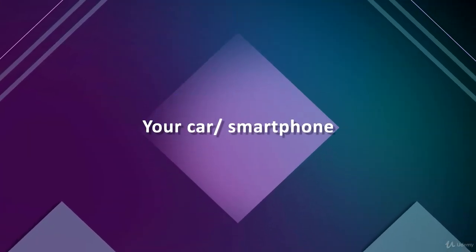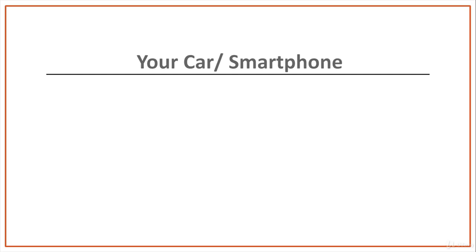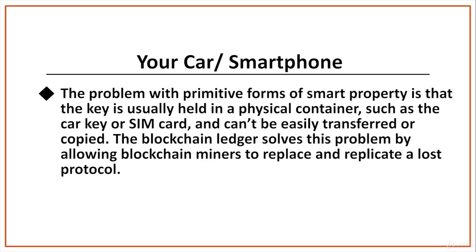Another example would be your car or even your smartphone. Primitive forms of smart property already exist. Your car key, for instance, may be outfitted with an immobilizer where the car can only be activated once you tap the right protocol on the key. And your smartphone will only function once you type in the right PIN code. Both work on cryptography to protect your ownership. But the problem with primitive forms of smart property is that the key is usually held in a physical container, such as the car key or the SIM card, and it can't be easily transferred or copied. The blockchain ledger solves this problem by allowing blockchain miners to replace and replicate a lost protocol.